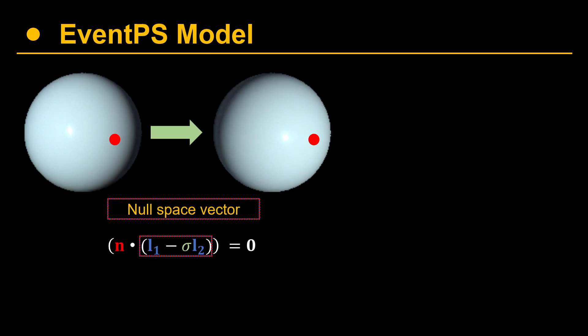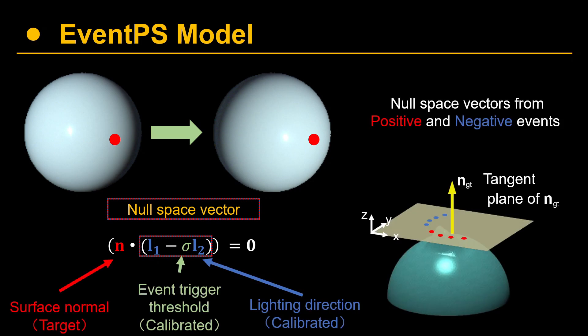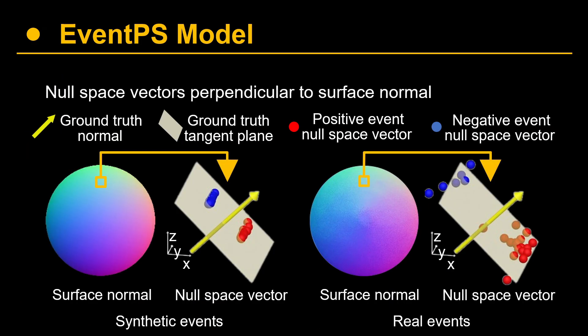The key to our solution is to convert each pair of consecutive events into a null space vector. This vector is composed of the event-triggering threshold and a pair of lighting directions. We have proven that this vector is perpendicular to the surface normal. More details can be found in our paper or in the 15-minute video.